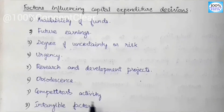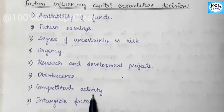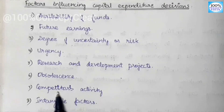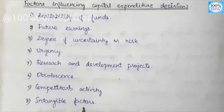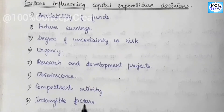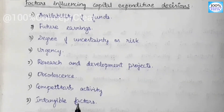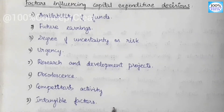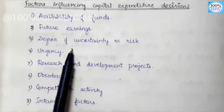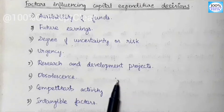The next factor is Competitors' Activity — if competitors are making new projects, we also make projects to withstand competition in the market, which influences our capital expenditure decisions. Finally, Intangible Factors such as the firm's prestige, workers' safety, and social welfare also influence capital expenditure decisions.